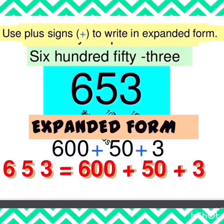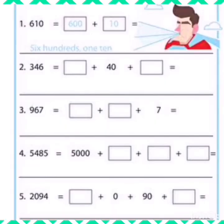Now let's take a few more examples. We have 610, 346, 967, 5485, and 2094 — try writing these numbers in expanded form. Take a paper and jot it down.